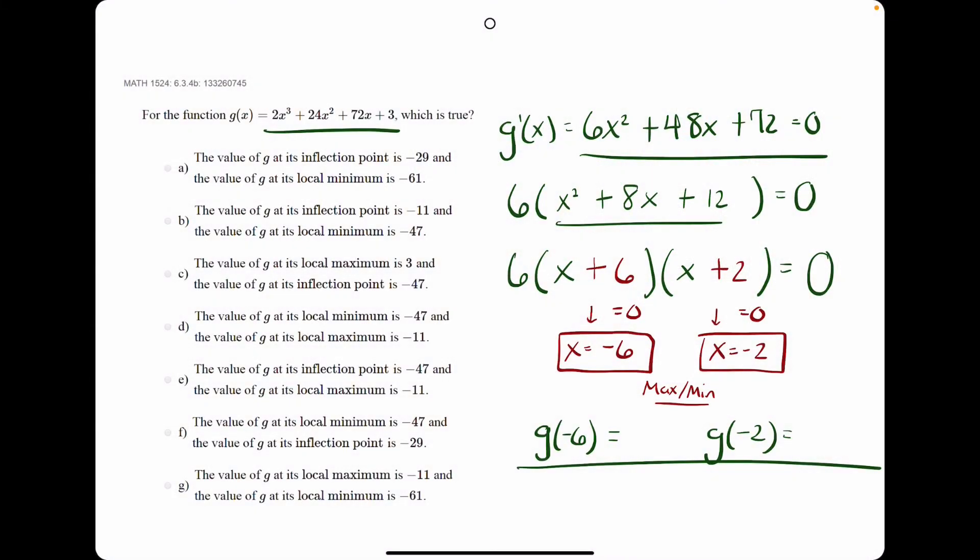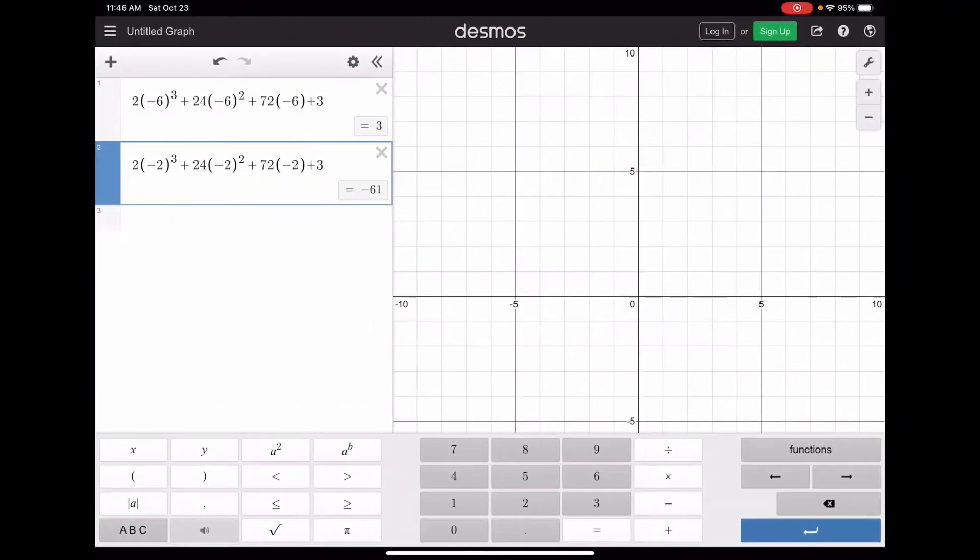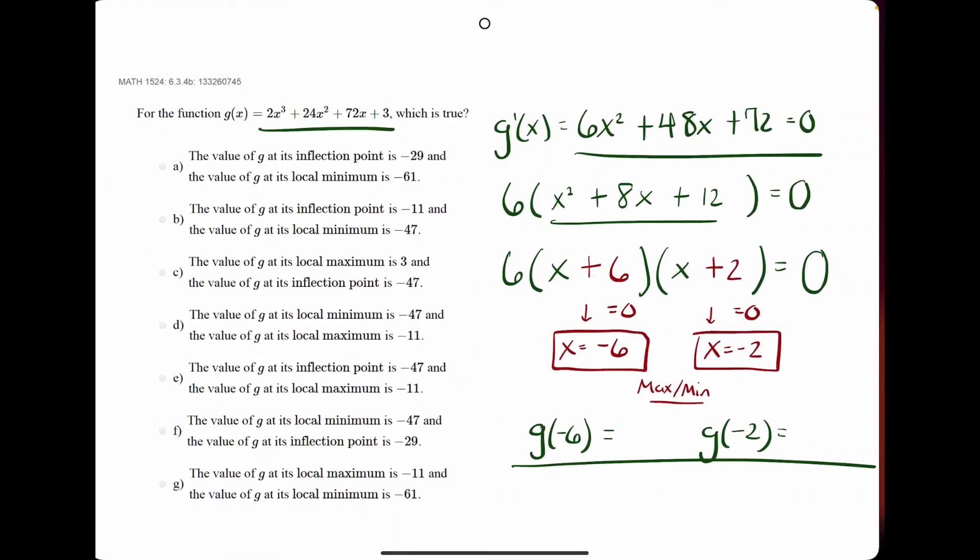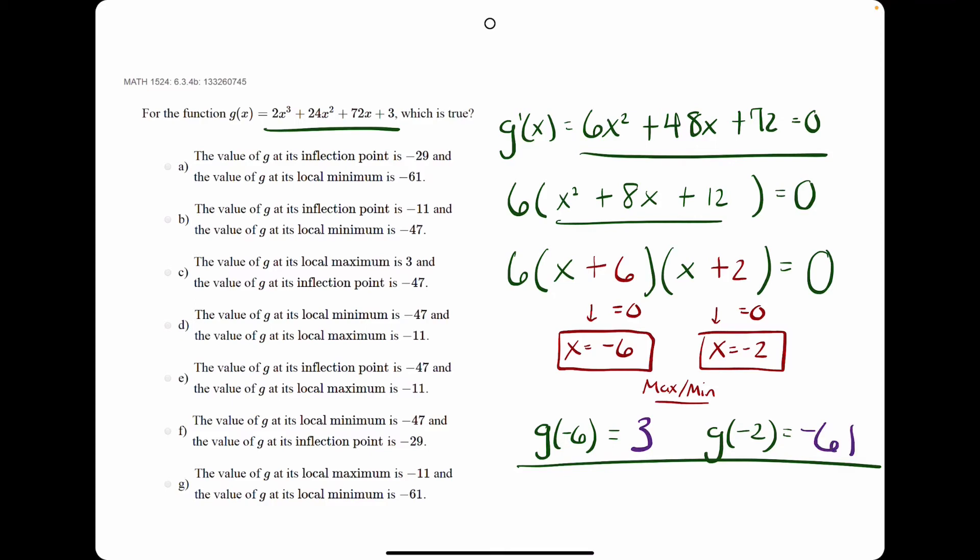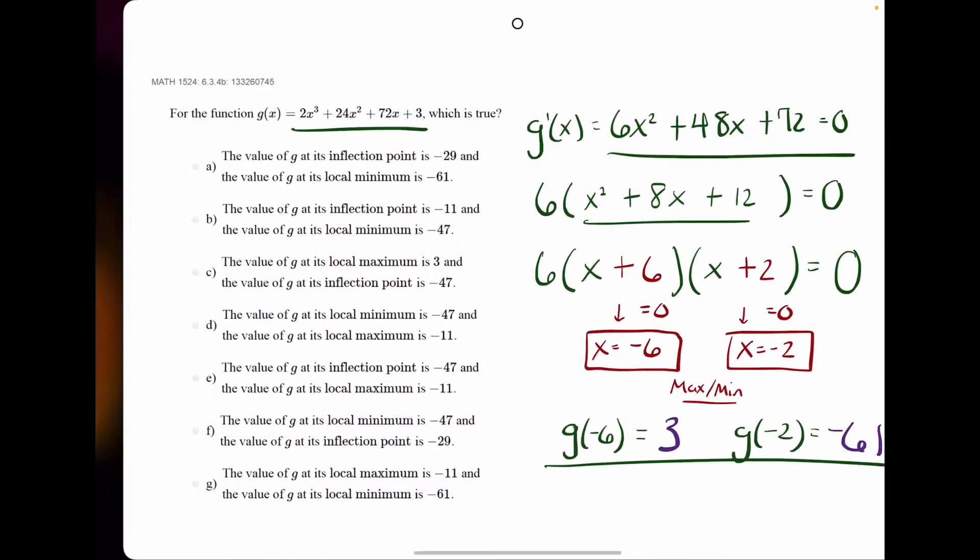When we plug in negative 6 and negative 2 into the original function g, we get 3 and negative 61 respectively.